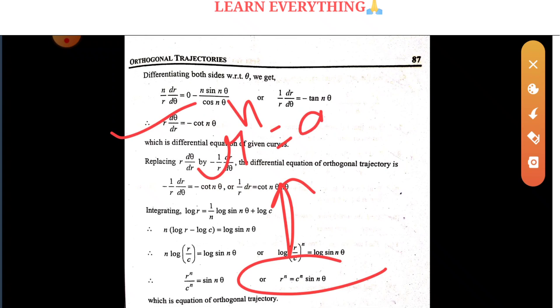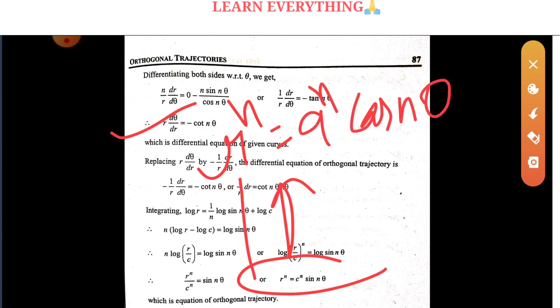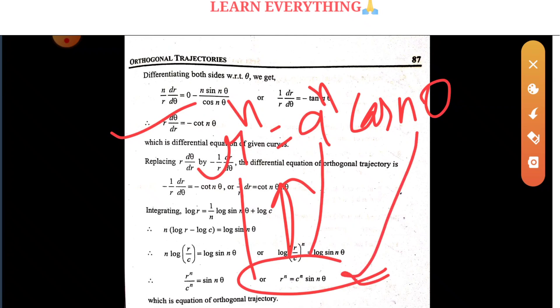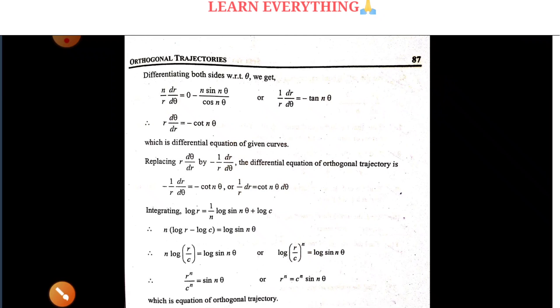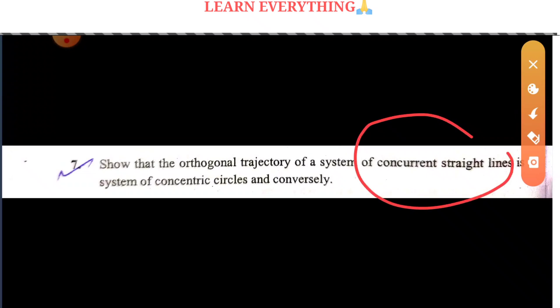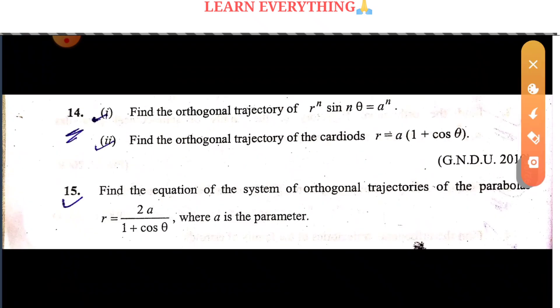So r^n·sin(nθ) = a^n, and the orthogonal trajectory gives r^n·cos(nθ) = c^n. Note: 1 + cosθ and 1 - cosθ are paired as orthogonal trajectories of each other. Also, it is mentioned that the orthogonal trajectory of a system of concurrent straight lines is a system of concentric circles. Conversely, the orthogonal trajectory of concentric circles is concurrent straight lines.